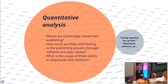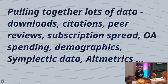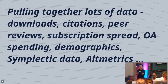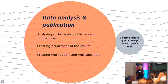The first part is the quantitative analysis: where are Cambridge researchers publishing, how much do they contribute through peer review and the editorial process, and how much usage is there of these works that are downloaded and cited? We'll be pulling together lots of data — not just what we already have, but looking into Symplectic for editorial activity, looking at open access costs, looking at the spread across disciplines, and also looking at the demographics of our researchers.